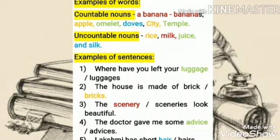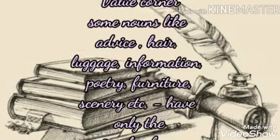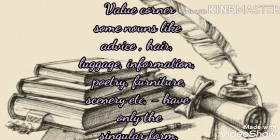Very important point — this is the value corner. Some nouns like advice, hair, luggage, information, poetry, furniture, scenery, etc. have only singular form. For example, we should say 'information' only — there is no word 'informations.' These words have only a singular form.